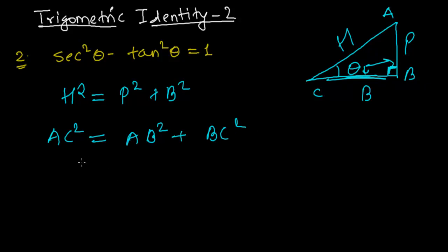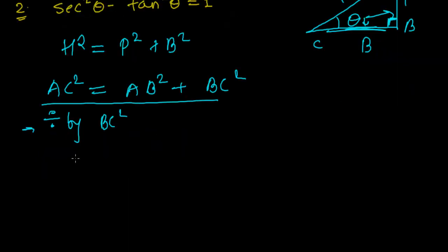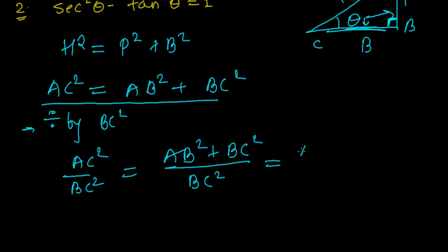Let's divide this whole equation by BC². We are dividing this whole relation by BC². So what do we get? AC² upon BC² equals AB² plus BC² divided by BC². It will be AB² upon BC² plus BC² upon BC². So these will cancel.